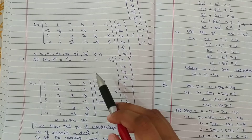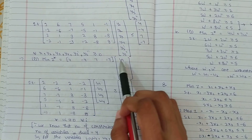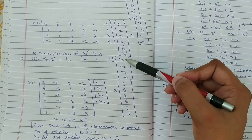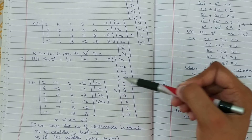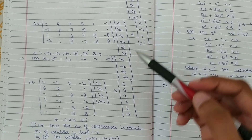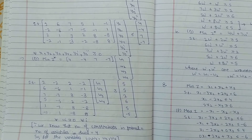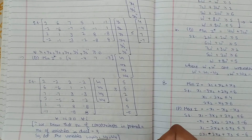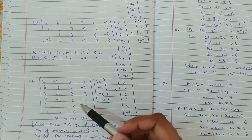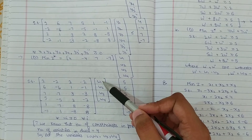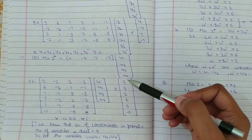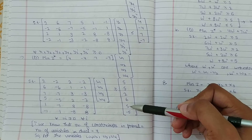तो हमारा dual क्या बनेगा? Minimum of Z* = B^T W = [4, −4, 7, −7] [W1, W2, W3, W4]. ये इसलिए आए क्योंकि number of constraints in primal = number of variables in dual. Primal में 4 constraints हैं, so variables हैं W1, W2, W3, W4. A का transpose करके A^T W ≥ C^T, जहाँ C^T = [5, 5, 2, 6, 5, −5].